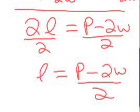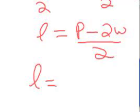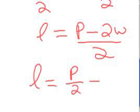And you could leave it like that. Or you could do, again, the divide by 2 goes with both things. So P divided by 2 minus W.